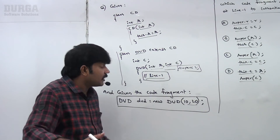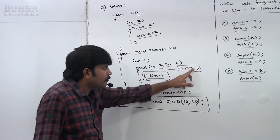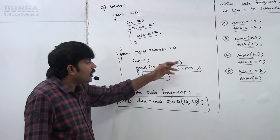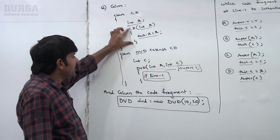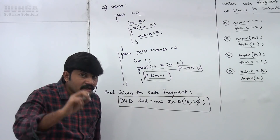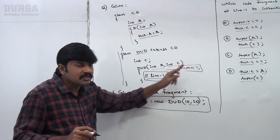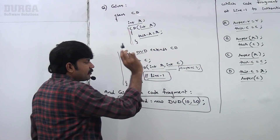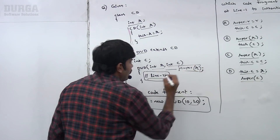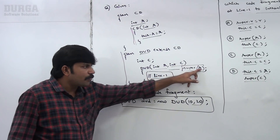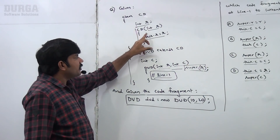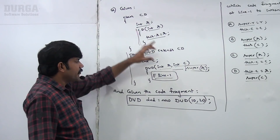If we are not writing anything, the compiler is always going to place super() — a no-argument call. But the no-argument constructor is not available in the parent, so you might get a compile-time error. So compulsory, you have to call this constructor explicitly. We have to write super(R) — meaning, call the parent class constructor which is responsible to initialize instance variable R.